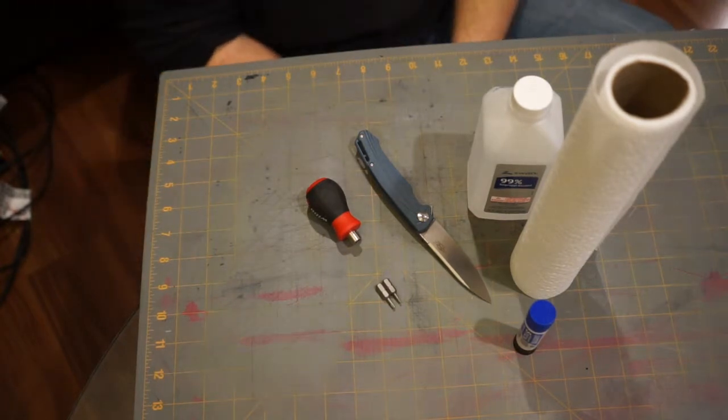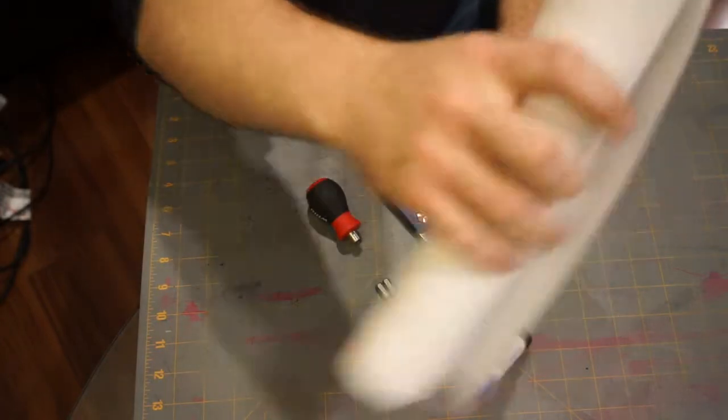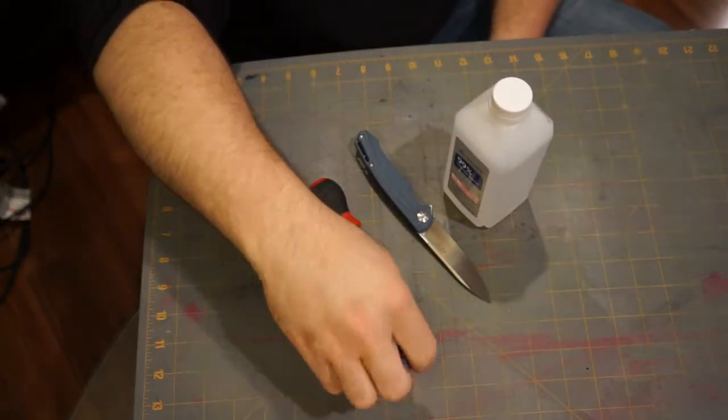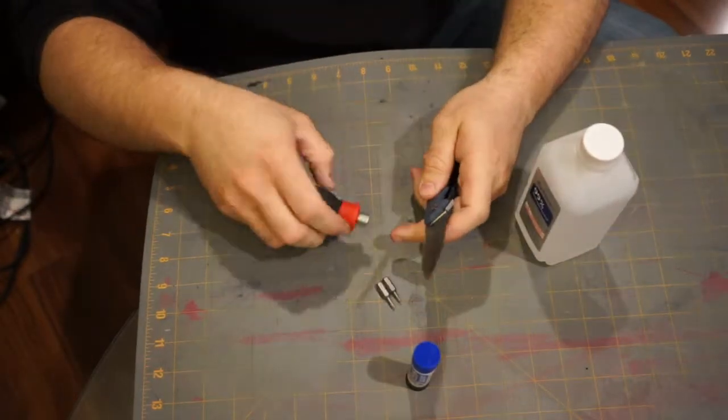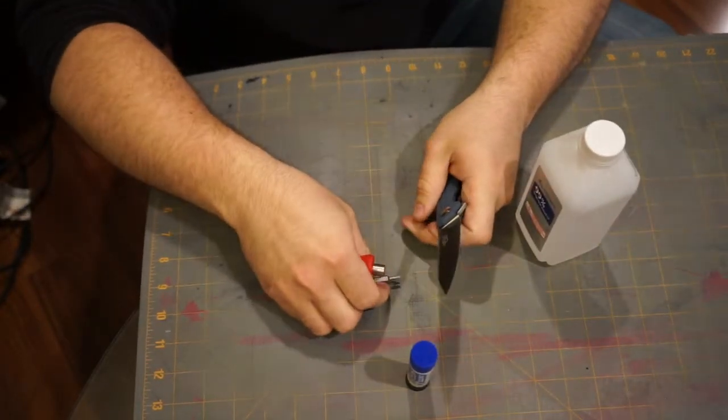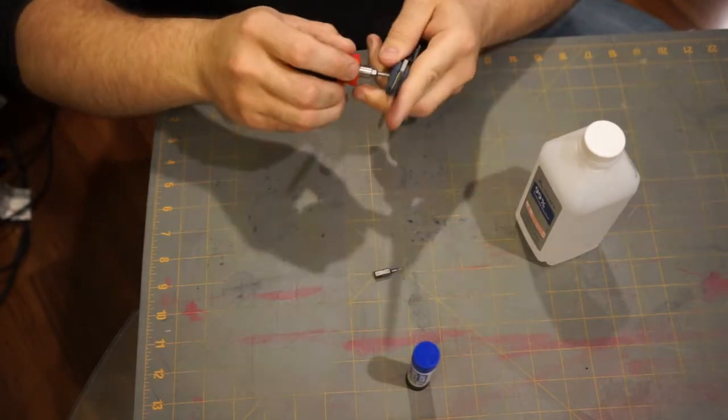What's going on guys? Today we're going to talk about disassembling and cleaning the GANZO. This is the FH21-GY. We'll start with the T8 Torx bit for the pivot.